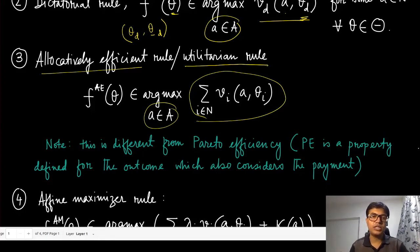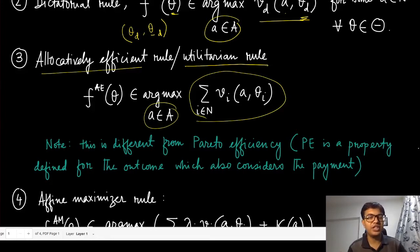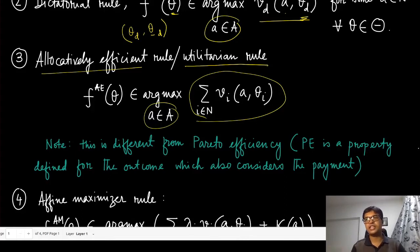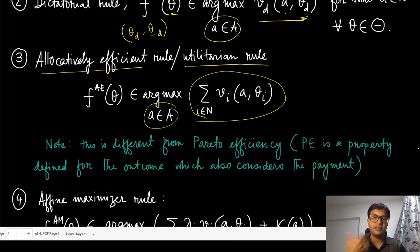It is important to note that allocative efficiency is different from Pareto efficiency. In the context of quasi-linear mechanism design, when we say an efficient rule, we mean the allocatively efficient rule, not Pareto efficient. Pareto efficiency is a property defined for the outcome which also considers payment, while allocative efficiency only looks at the valuation component. Pareto efficiency requires every agent's utility to be at least as good, with some strictly better, whereas allocative efficiency maximizes an aggregated sum.